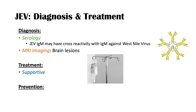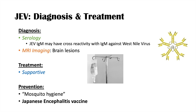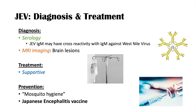Prevention of JEV is through mosquito hygiene: in endemic areas, wear long-sleeve clothing to cover as much skin as possible, use insect repellent, and use a mosquito net when sleeping outside. These measures reduce the risk of JEV and many other mosquito-borne illnesses. There is also a Japanese encephalitis vaccine that can further reduce the likelihood of becoming infected.